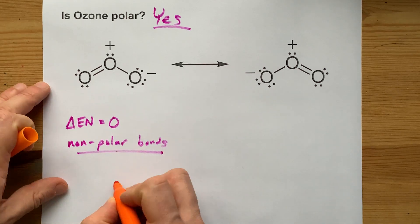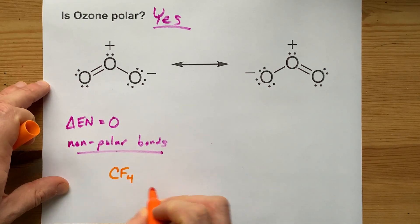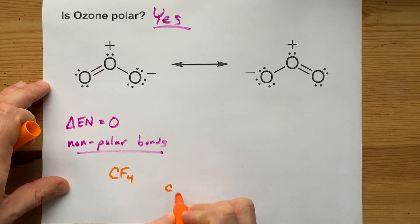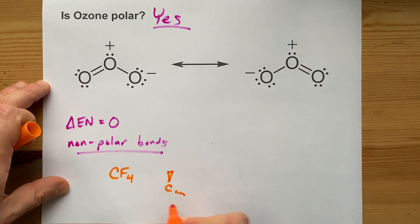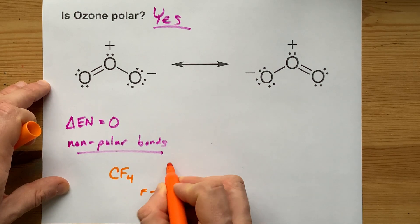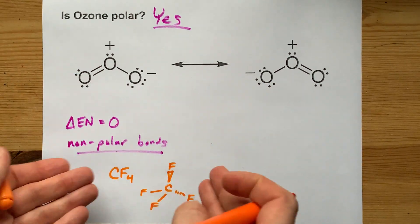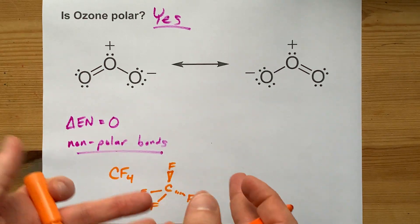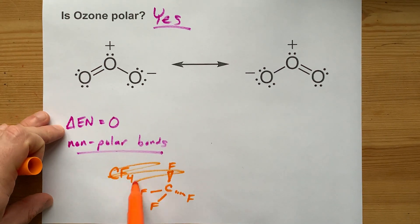That is the case for something like CF4, where you have a carbon in the center. Each of those bonds is a polar bond, but because they're all pulling equally in all directions, the dipoles of those polar bonds cancel out. You get an overall dipole of zero, and it ends up being non-polar.